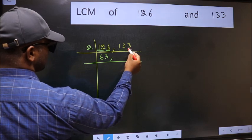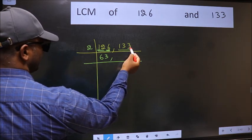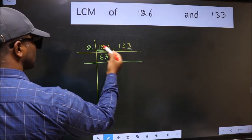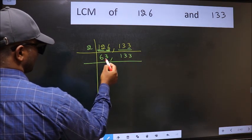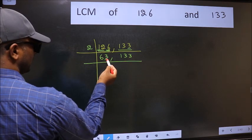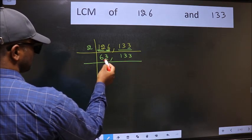The other number 133, last digit 3, not even. So this number is not divisible by 2. Write it down as it is. Last digit 3, not even, so not divisible by 2.